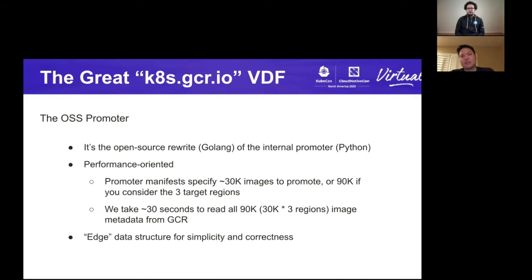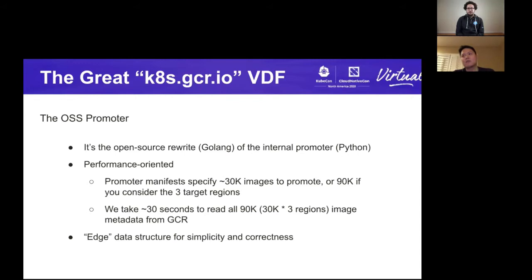Fast forward to late 2019, and we decided to do an open source version of the promoter. But we couldn't just copy-paste the code from Google's codebase to GitHub to donate it — it wouldn't have worked anyway, because we needed performance guarantees that weren't there. The scale is completely different. For the internal Google case, we were talking about a handful, maybe a couple hundred images. But for the open source case, we're talking about everything — the open source version tracks roughly 30,000 unique images. So the manifest is much bigger. To do that, we had to rewrite it in Go.